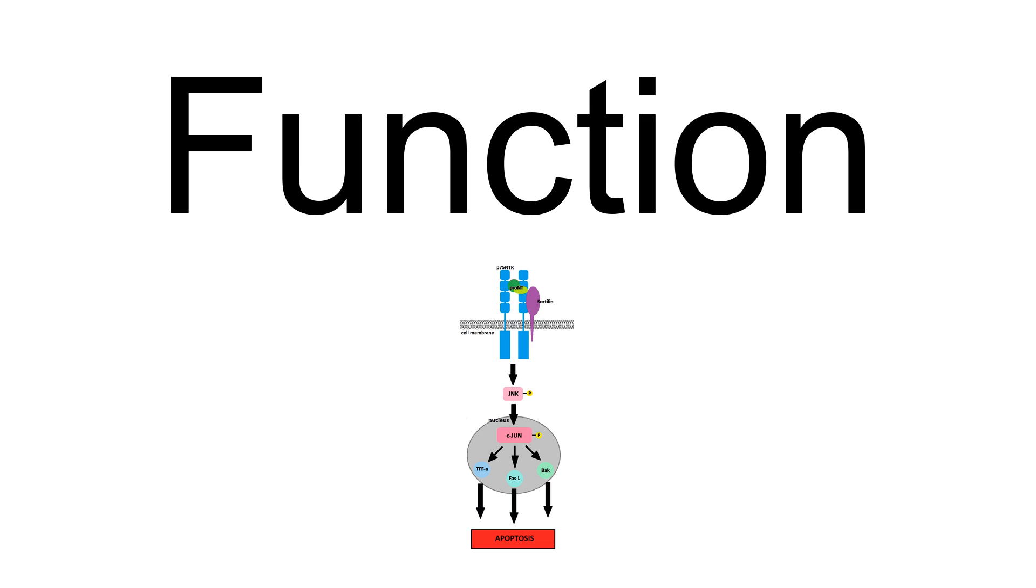There are two classes of receptors for neurotrophins: P75 and the TRK family of tyrosine kinase receptors.